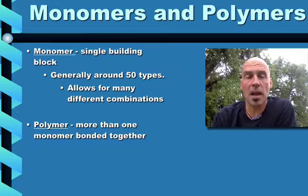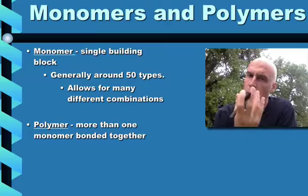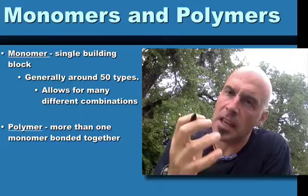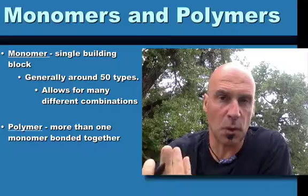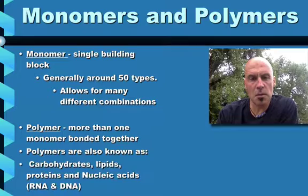All right, a polymer, poly meaning many, like polynomial, more than one monomer bonded together. So you have the monomer, which is a single building block. You put those things together and then you've got a polymer, which is composed of a lot of monomers, almost like Legos. If you think of like the Lego as being a monomer, like a single block, a polymer might be like the building or whatever that you build with the Legos.